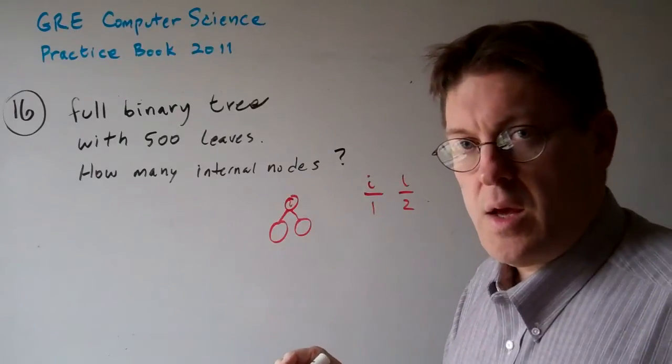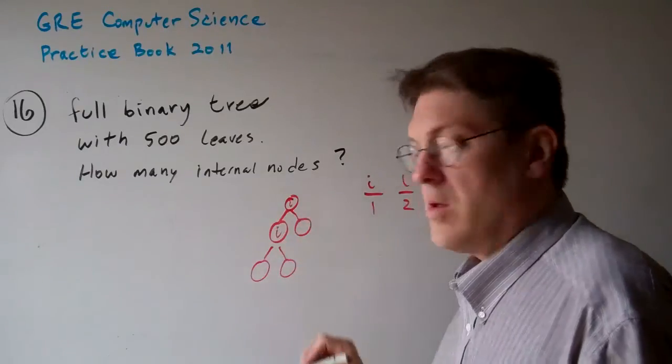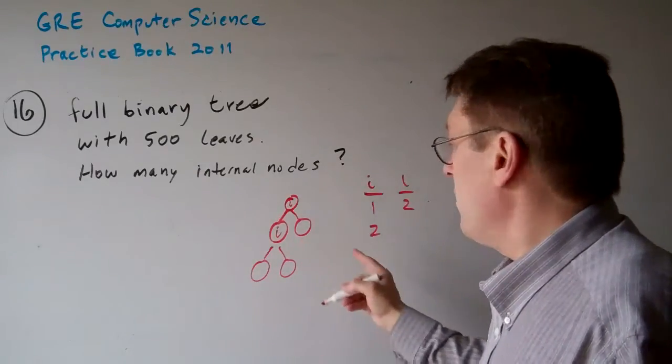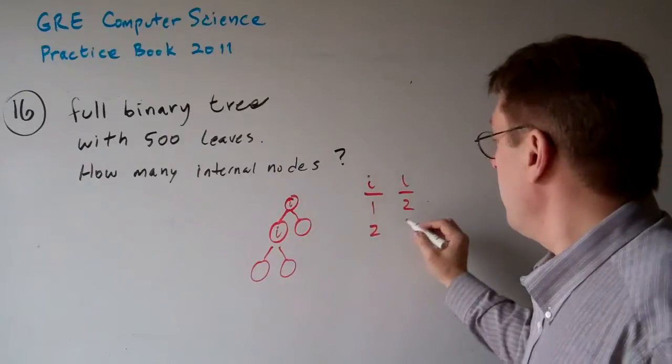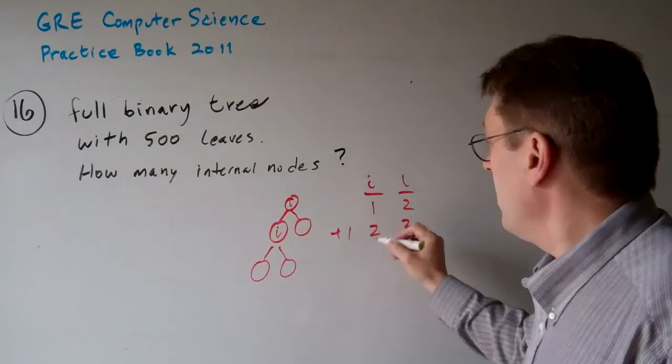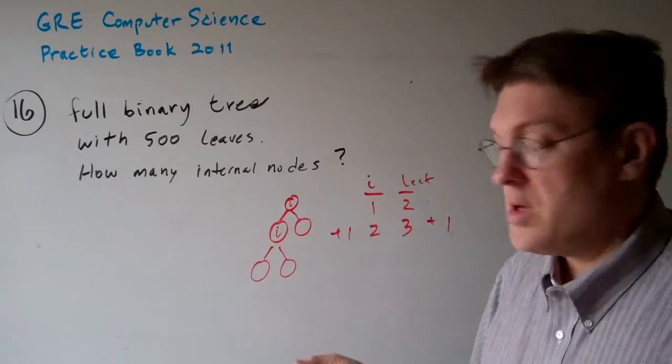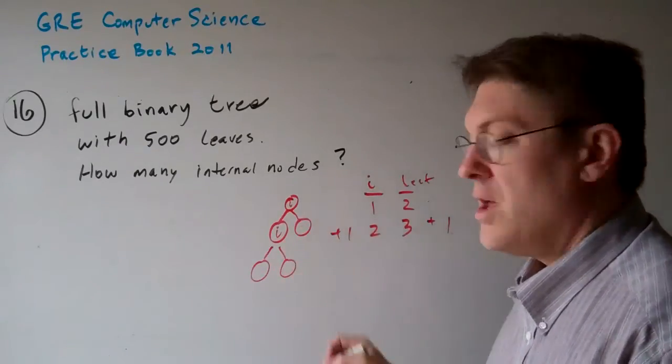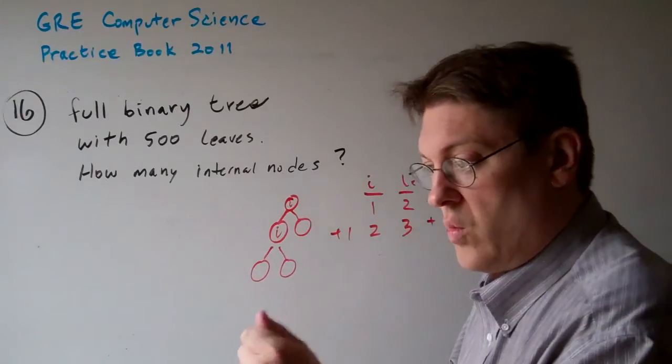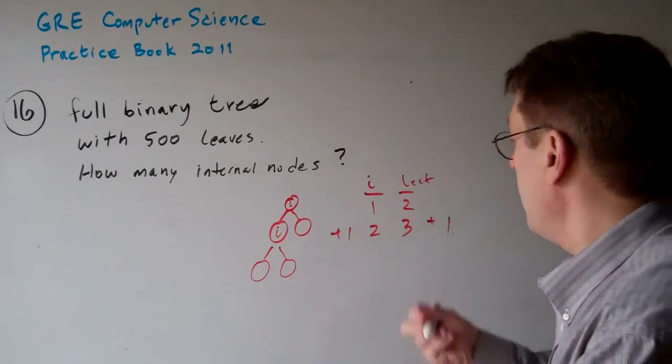Now what if we add two more off of this one and turn this into internal? Now we've added one internal node. We've lost a leaf, but we've gained a leaf. So basically, every time, it's plus one internal node and plus one leaf.